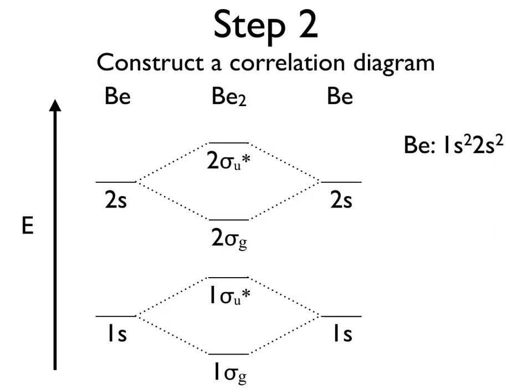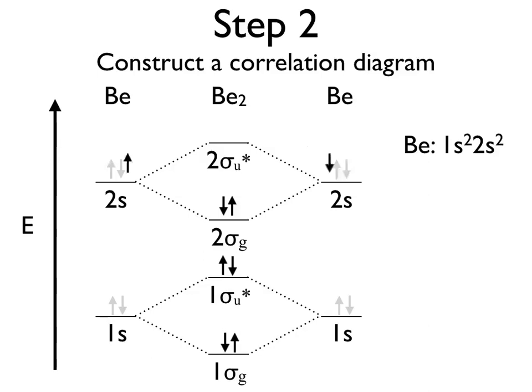Now that we have this structure filled out, we can begin to place the electrons from our atoms into the atomic orbitals. Each beryllium atom has two electrons in its 1s and 2s atomic orbitals, so these are filled. We then push those atomic orbital electrons into our molecular orbitals, building from the bottom up following Hund's rule and the Aufbau principle. The 1s electrons go into the 1 sigma g molecular orbital, but the remaining two must go into the anti-bonding 1 sigma u* orbital. The same logic applies for the 2s orbitals — their electrons go into the 2 sigma g bonding orbital and then into the 2 sigma u* anti-bonding orbital.